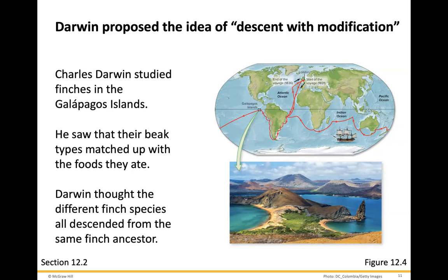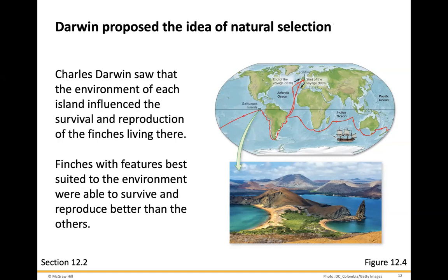Darwin thought these different finch species all descended from the same finch ancestor. If food is located in a particular area and in order for you to access that food you need certain anatomical features, most likely the organism's structure would adapt to that. Darwin saw that the environment of each island influenced the survival and reproduction of the finches living there. Finches with features best suited to the environment were able to survive and reproduce better than others.